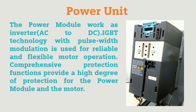The power module works as an inverter, converting AC to DC supply. In this power module we have connected IGBTs. With the help of pulse width modulation, it changes the frequency of the source, and finally we are changing the frequency and thereby controlling the motor's speed and torque. This power module also protects the motor with power protection.